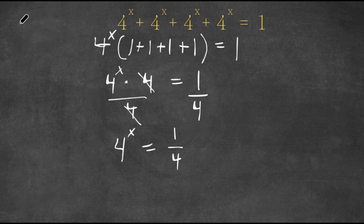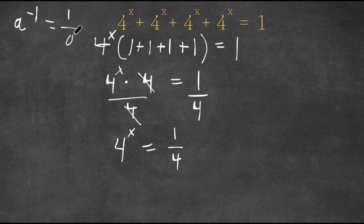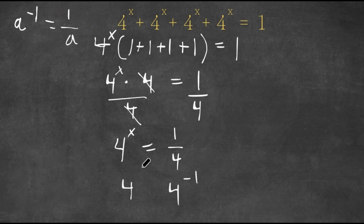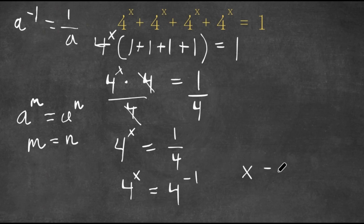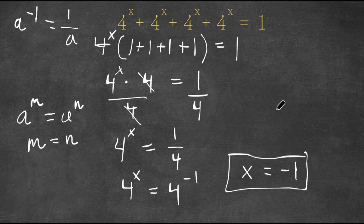Now, if we have a to the power of negative 1, that is equal to 1 over a. So in this case, 1 over 4 is the same thing as 4 to the power of negative 1. So now I have 4 to the power of x is equal to 4 to the power of negative 1. And if a to the power of m equals a to the power of n, then m equals n. So in this case, m is x and n is negative 1, meaning x is equal to negative 1. So negative 1 is our answer.